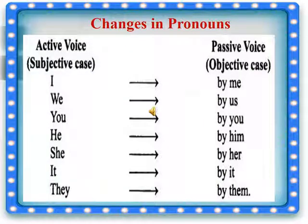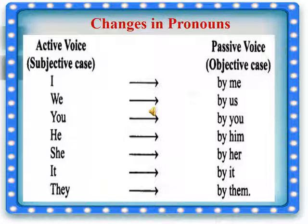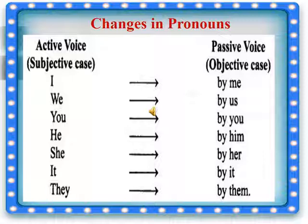Now let us see changes in pronouns. If a sentence is in active voice and it has 'I', it will change to 'by me' in passive. 'We' will change to 'us', 'you' to 'by you', 'he' to 'by him', 'she' to 'by her', 'it' remains as it is, and 'they' becomes 'by them'.